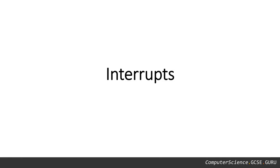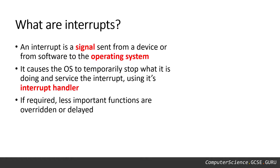Let's take a look at interrupts. What is an interrupt? An interrupt is a signal sent from a device or from software to the operating system. It causes the operating system to temporarily stop what it's doing and service that interrupt using the interrupt handler. If required, less important functions are overridden or delayed.